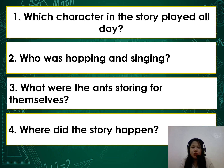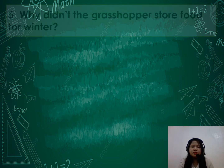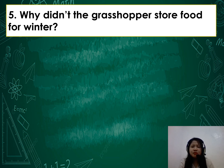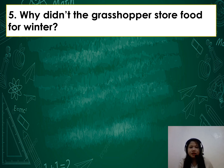Number 4: Where did the story happen? Very good — that is in the grassy meadow. Number 5: Why didn't the grasshopper store food for winter? It is because the grasshopper thought that during summer there would be enough food, and he thought summertime was for singing and playing all day long.